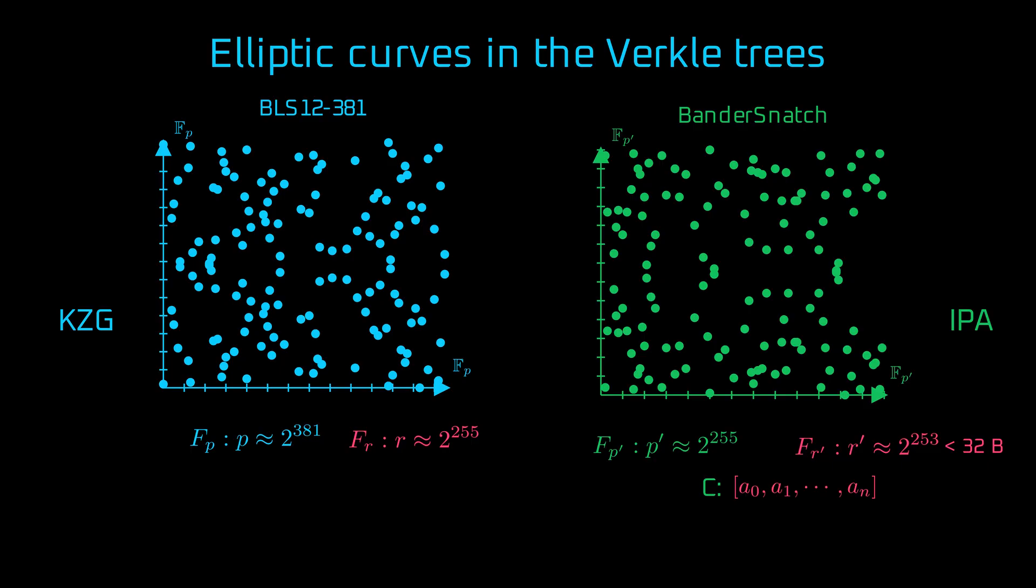The IPA commitment to the vector is just a single elliptic curve point, like in KZG. IPA proofs, however, consist of several elliptic curve points. So while the commitment itself is constant-sized, the proof size grows logarithmically as the vector size grows.